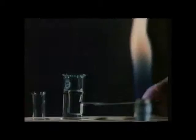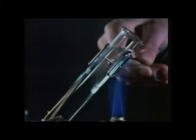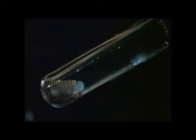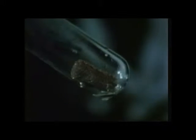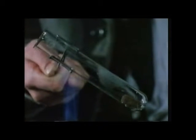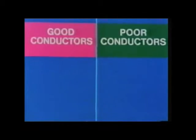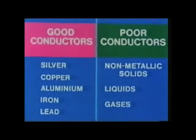The water at the top of the test tube is then heated. It soon comes to the boil, but the ice at the bottom remains unmelted for several minutes, showing that water is a poor conductor. A similar experiment, with ice in a test tube containing only air, shows that air is an even worse conductor than liquids. So we can divide materials into good conductors and poor conductors. The metals are good conductors, the best being silver and copper. Non-metallic solids, liquids and gases are all poor conductors. Poor conductors are called insulators.